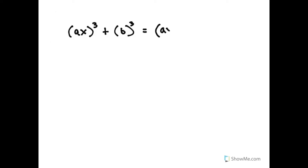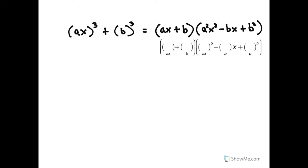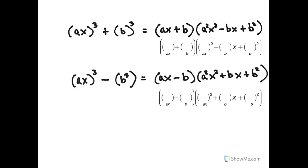So the sum of cubes factors to a plus for the binomial, and then a squared x squared minus bx plus b squared for the quadratic. You can either remember that the binomial part has a plus and then use synthetic division for the second part, or you can memorize the template. The difference of cubes factors similarly. The minus matches the minus in the first term, and it's got a plus for b, whereas with the sum of cubes you have a plus in the first term but a minus with the bx term. So that's factoring the sum and difference of cubes.